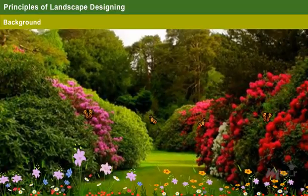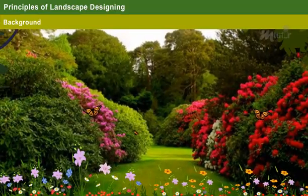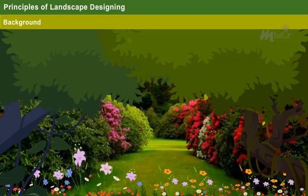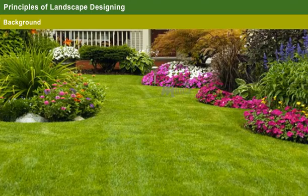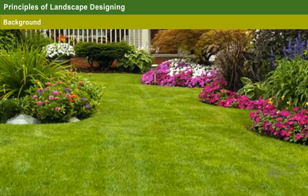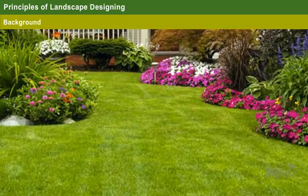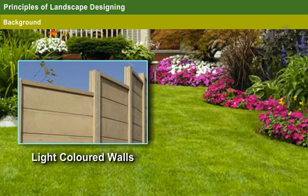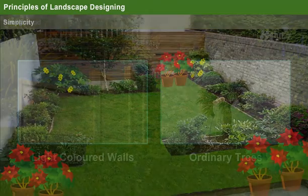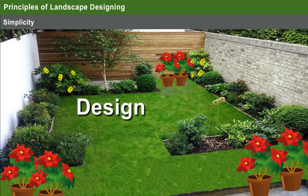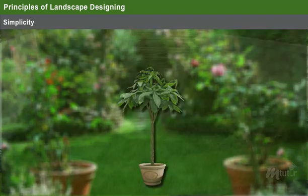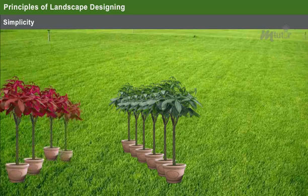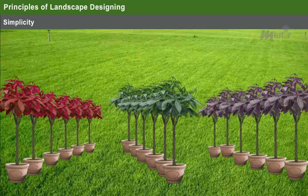Background. It is important to design the background of the landscape in such a way that it doesn't distract the main features of the garden. Hence, it is necessary to have a background with neutral featured elements. For example, light colored walls and ordinary trees. Simplicity provides both design and art in the landscape. The designer has to decorate the garden with simple things. For instance, use only two or three colors as repetition all over the garden.